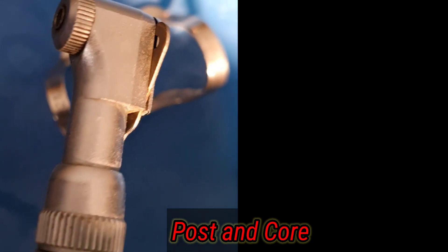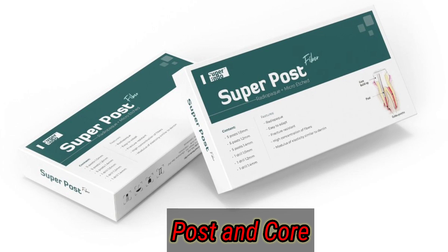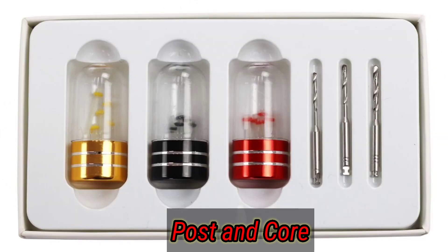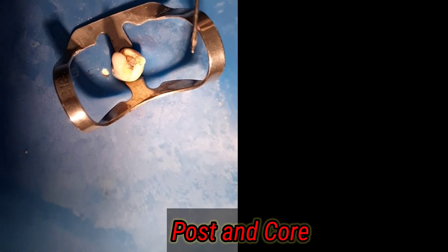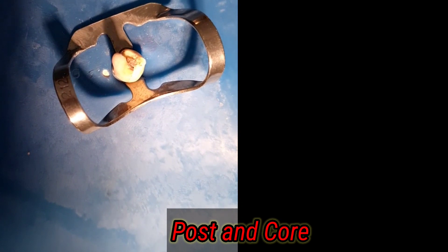In this video we'll be using Super Endo super fiber optic post and it is very easy to use. This Super Post Endo post comes in three colors: yellow color with a diameter of one millimeter, black color 1.2 millimeter diameter, and red color 1.4 millimeter diameter. So let's begin with the post and core procedure.